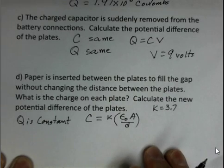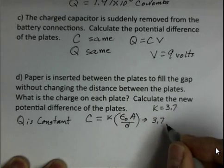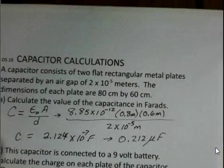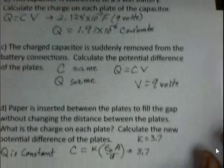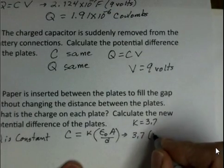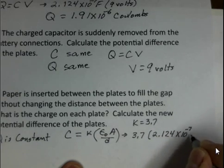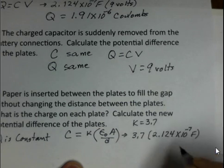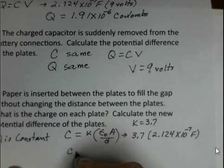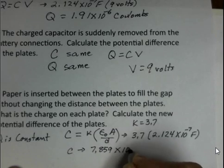So the capacitance value is going to be 3.7 times what the old capacitance value was. We've already worked out epsilon naught A over D, so I'm not going to repeat that. So we get 3.7 times 2.124 times 10 to the minus 7 farads. 3.7 times this, so the capacitance number is now 7.859 times 10 to the minus 7 farads. It's larger than before by this factor of 3.7.